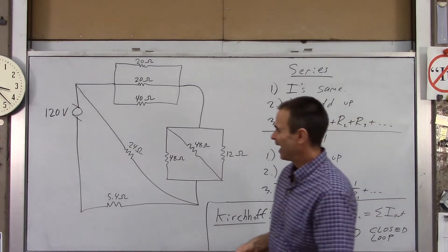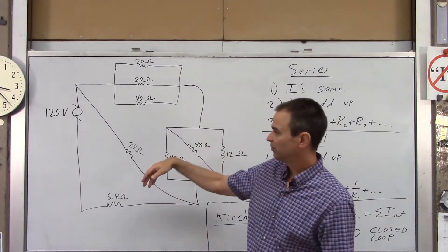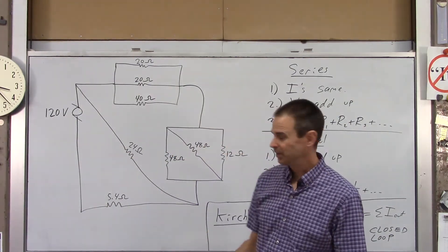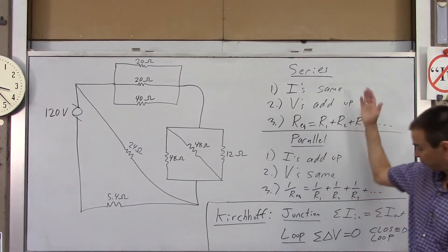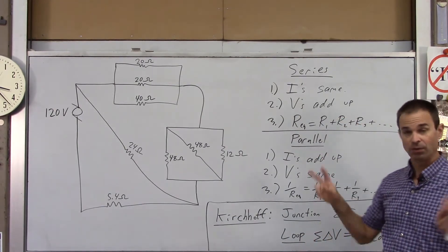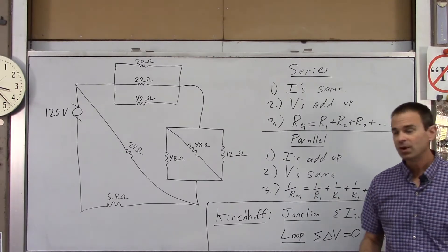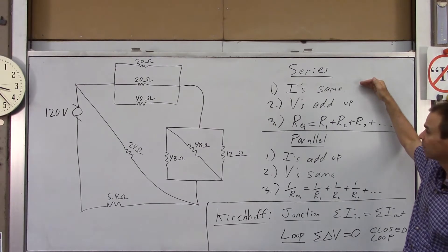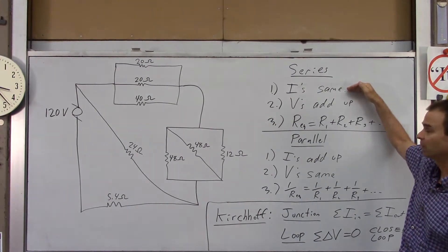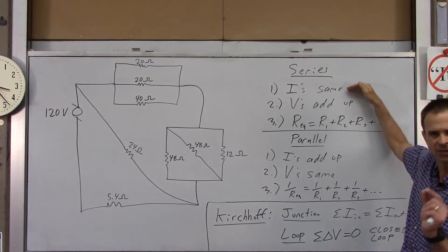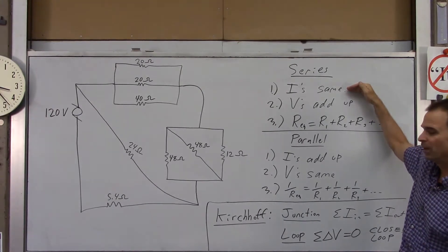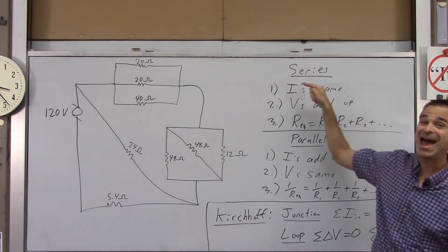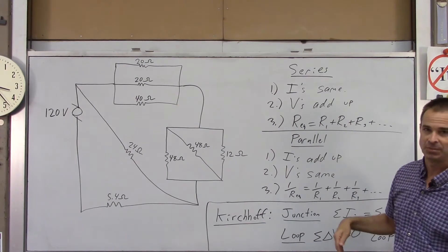We have a circuit with a bunch of resistors — some are in series, some are in parallel — and a 120 volt source, maybe like your wall outlet. In a series circuit, any series component carries the same current, because current is the flow of electrons. If the electrons go through one resistor, they have to go through the next one.